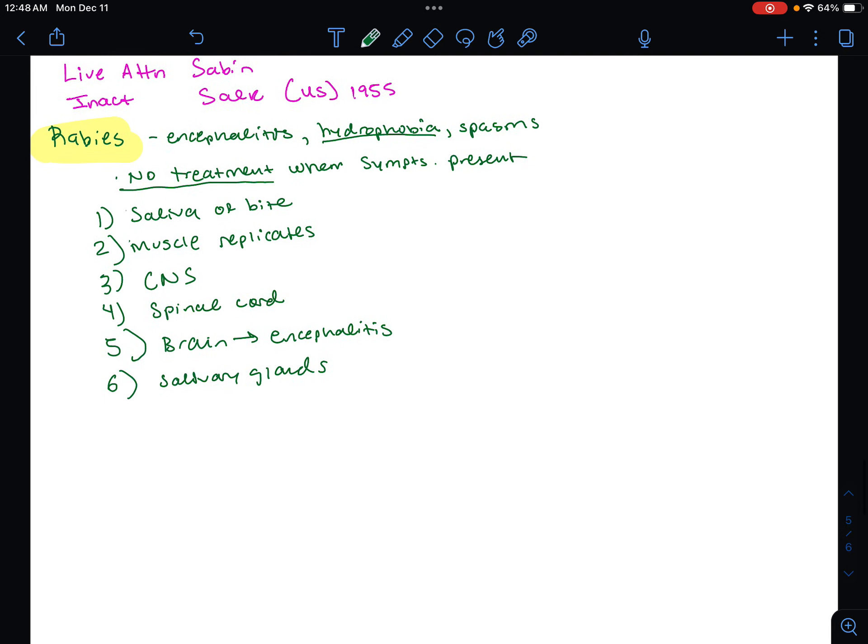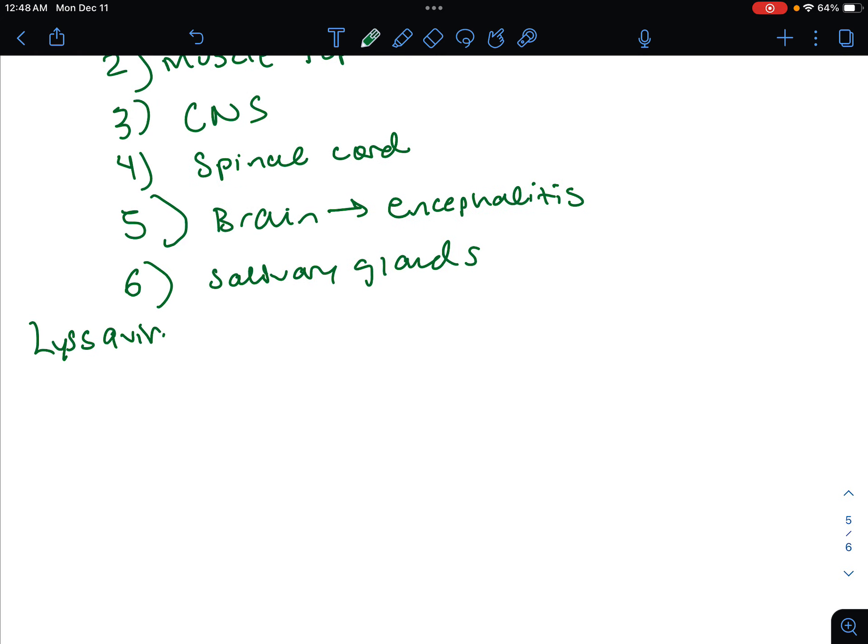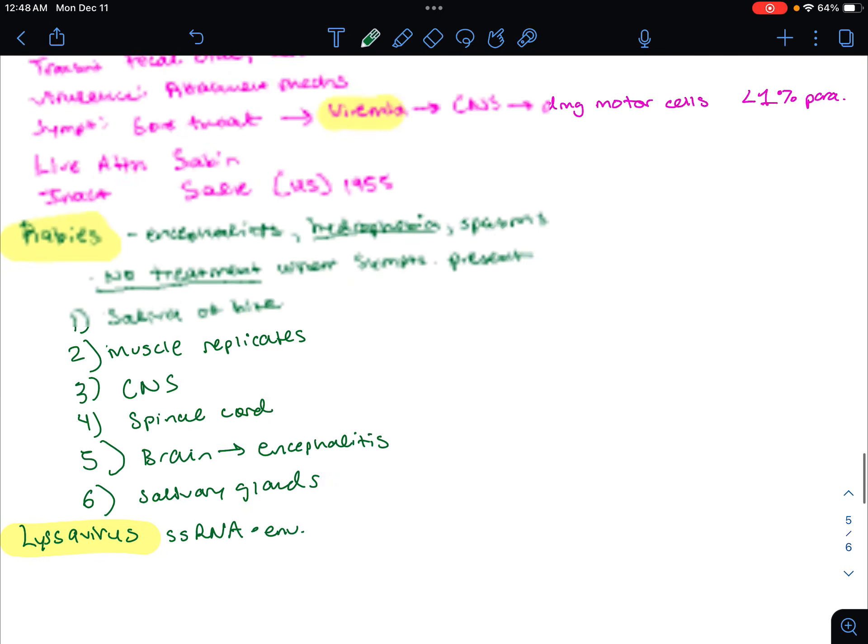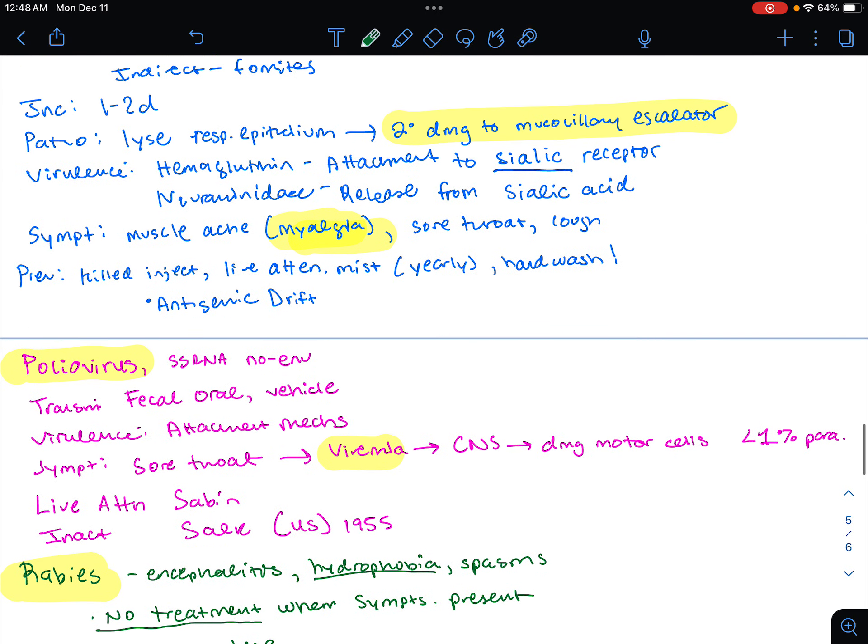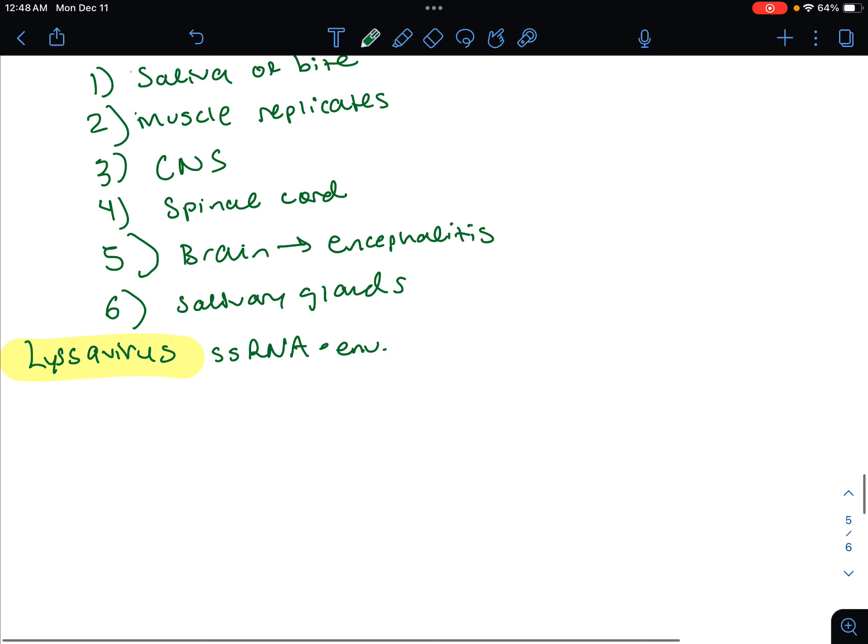The rabies lyssavirus is going to be the cause of this. As a causative organism, this is going to be the SSRNA enveloped. The non-enveloped one so far was poliovirus. Transmission: we're going to have the saliva from bite from an animal. Droplet contact, same thing, saliva contact.